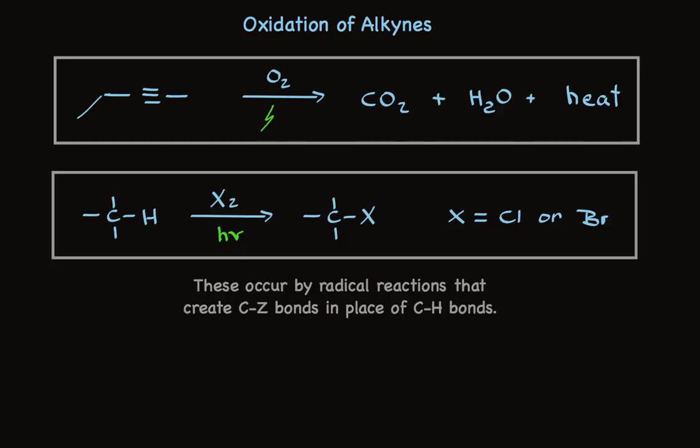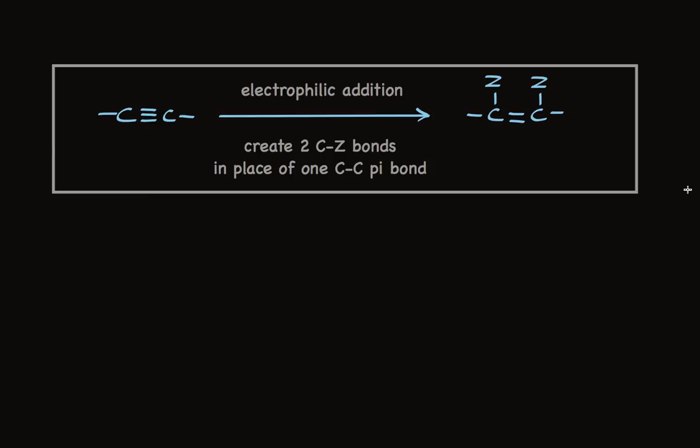So, the radical reactions are oxidation reactions, and electrophilic addition can be too. When electrophilic addition attaches a heteroatom to each of the two carbons where the pi bond is being broken, we have an oxidation.